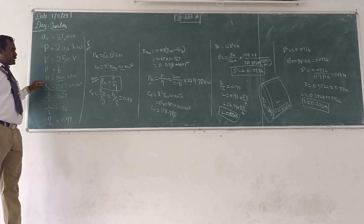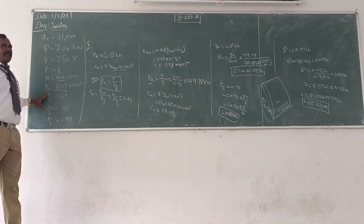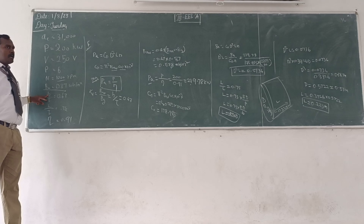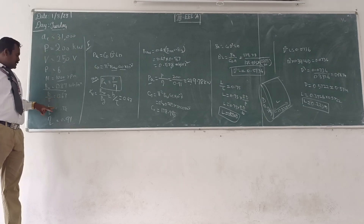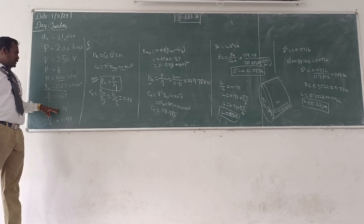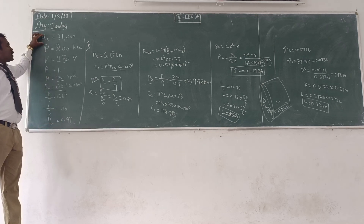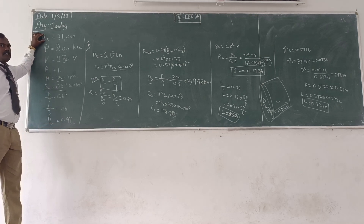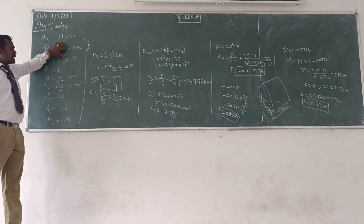It has a maximum flux density of 0.87 weber per meter square. Compared with the last problem, here they are given the ratio of pole arc to pole pitch equal to 0.67, and the ratio of pole core length to pole pitch equal to 0.75. The efficiency of the machine is given as 91%, and the total number of ampere conductors used in the machine is 31,000 ampere conductors per meter. This is the given data.